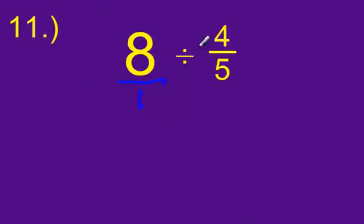Okay, eight over one divided by four-fifths. Keep. Change. Flip. Can we cross-reduce it all? Yes, we can. That four becomes a one, that eight becomes a two. Two times five, that's ten. One times one, that's one. Ten over one equals ten.